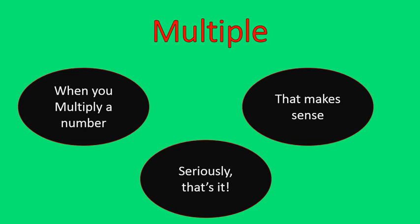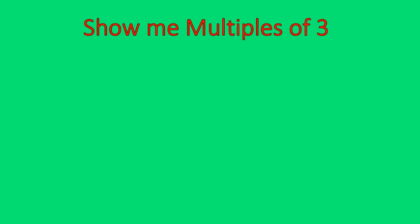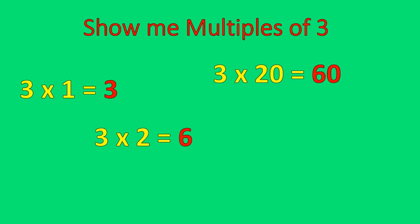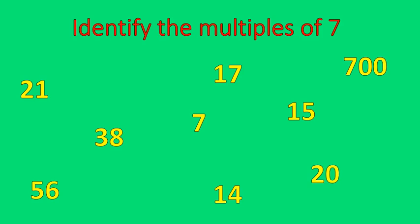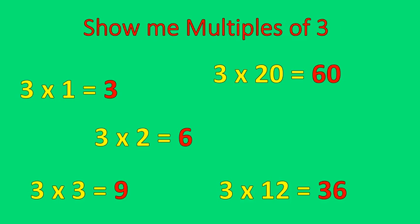Let me show you an example. Show me some multiples of 3. Well, 3 times 1 is 3, 3 times 2 is 6, 3 times 20 is 60, 3 times 3 is 9, 3 times 12 is 36. Those are examples of multiples — the numbers in red: 3, 6, 9, 60, 36, 600, 300. These are all multiples of 3.